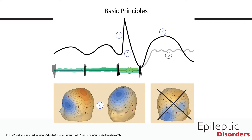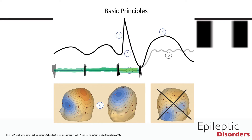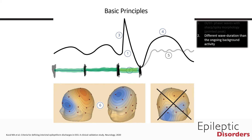The second criterion is looking for the duration of the waveform. As you can see, outlined by the green below the sharp wave, the duration of the epileptiform discharge is shorter, i.e., different, in comparison to the duration of the waveforms that preceded. This fulfills criterion number two.